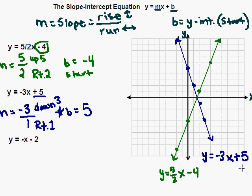So again, we started up at positive 5 and then applied our slope, going down 3 to the right 1 each time.